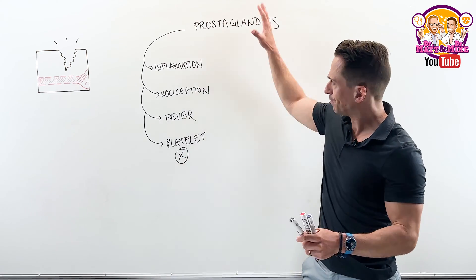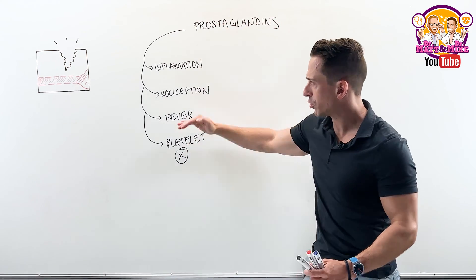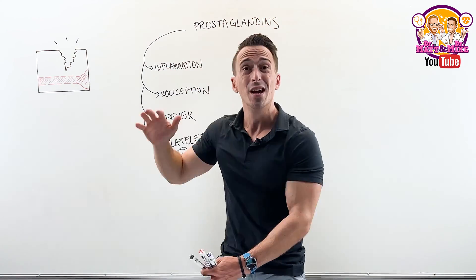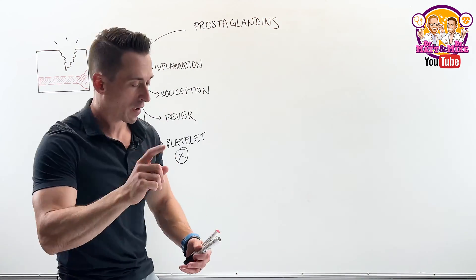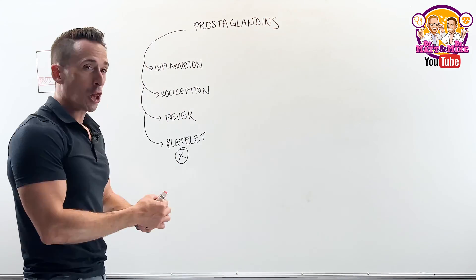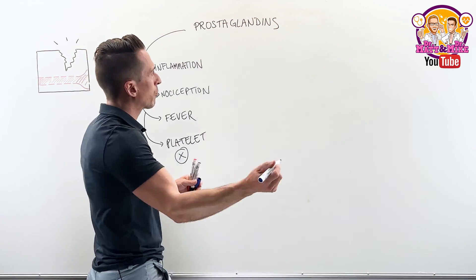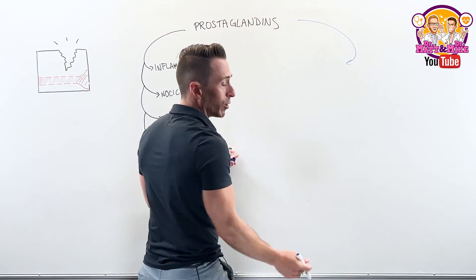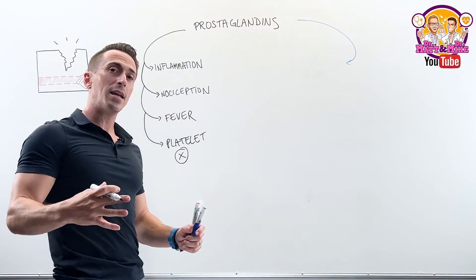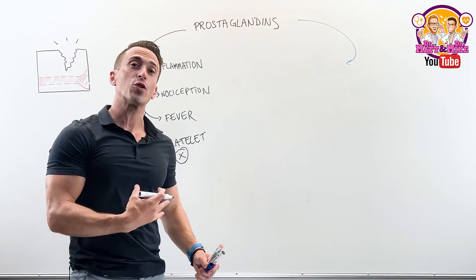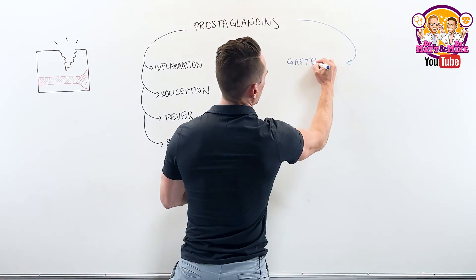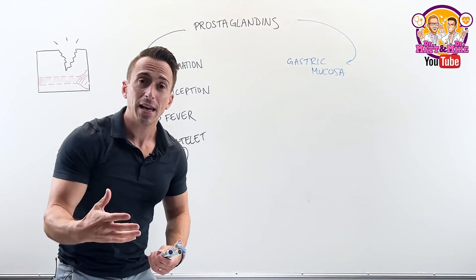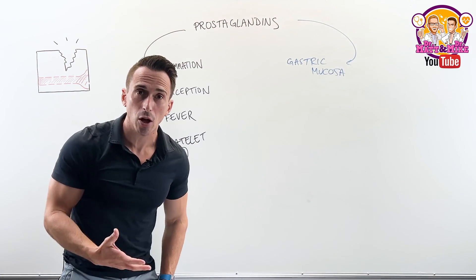Now, this isn't the full list of what prostaglandins do — they actually do a whole bunch of other things. Prostaglandins can actually play an important role in maintaining our gastric mucosa — that is our stomach lining.